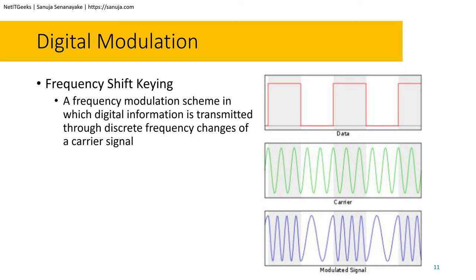Frequency shift keying, or FSK, is a frequency modulation scheme in which digital information is transmitted through discrete frequency changes of a carrier signal. When the modulating signal and carrier signal become dense and have a specific mathematical agreement, the digital signal will have a one. When there is no density in the modulating signal and no mathematical agreement, you get a zero. This is a very high level overview of frequency shift keying.